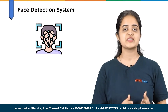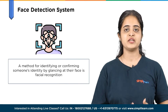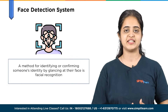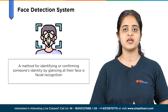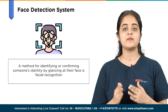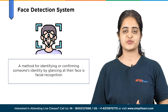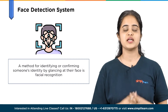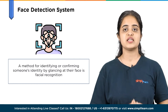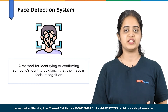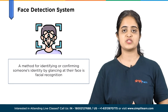Face detection system. It is a form of biometric recognition. A method for identifying or confirming someone's identity by glancing at their face is called facial recognition. People can be identified by securing a match on facial ID using this technique. Real-time visuals, videos and photos can be the sources to run face detection. This technology is mostly employed in security and law enforcement. OpenCV is the best technology to create it.